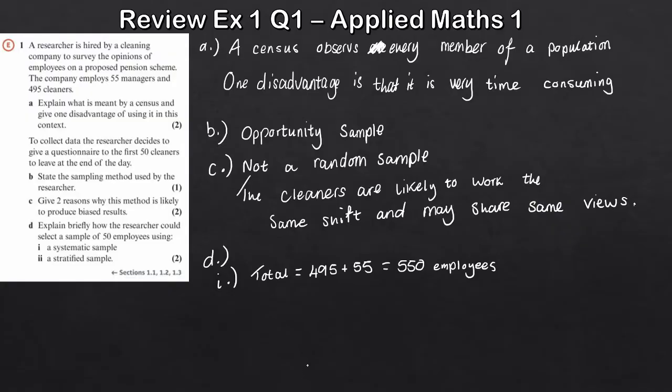The first thing we should do is allocate every employee a number. Allocate a number from 1 to 550 to all employees.